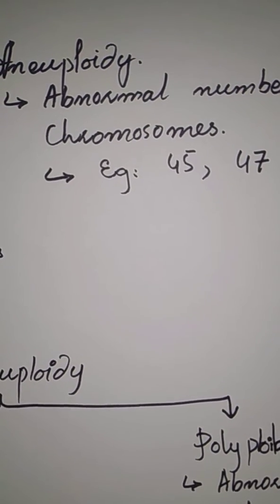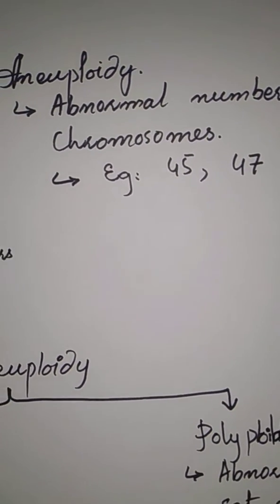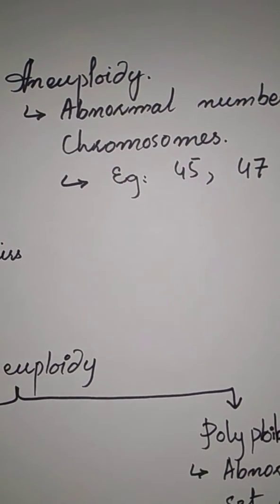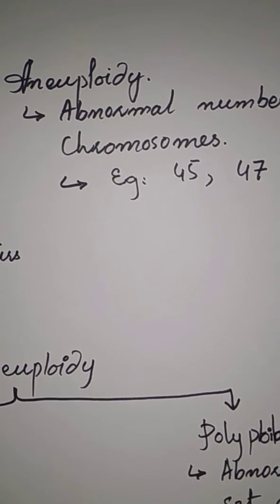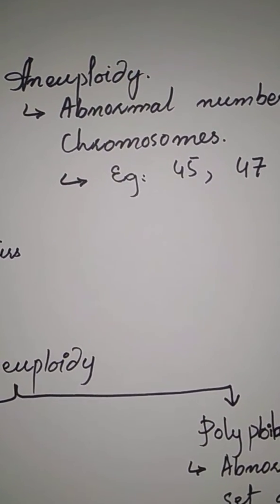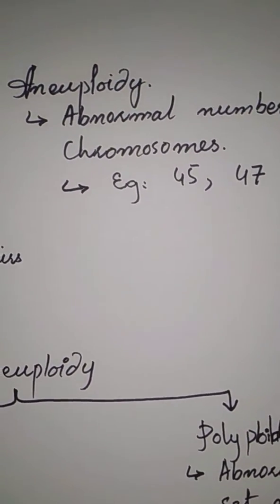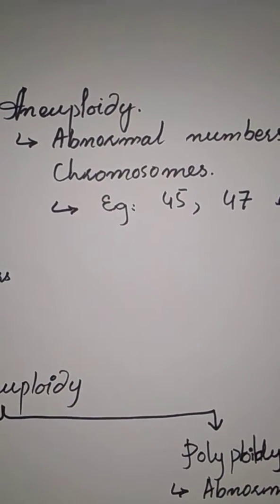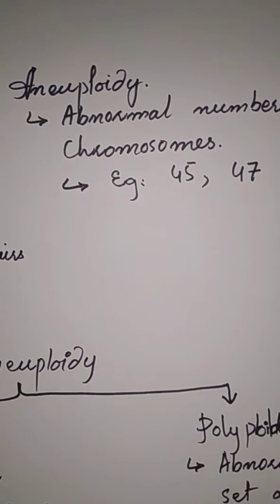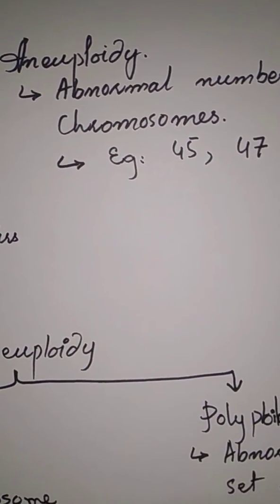Aneuploidy is caused by non-disjunction during cell division. Because there is a disturbance in division, chromosomes do not divide normally.